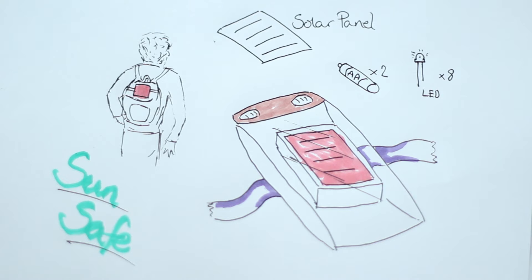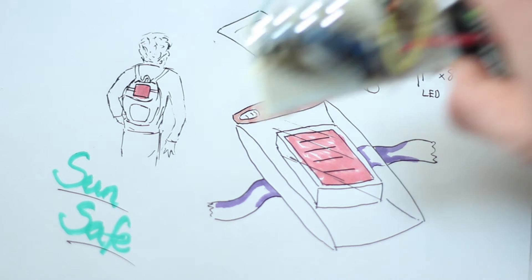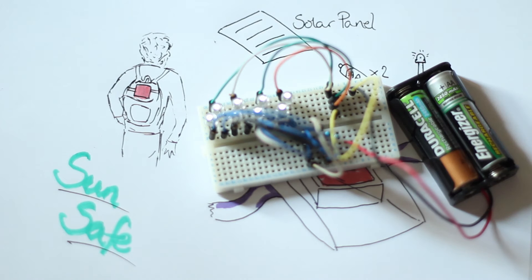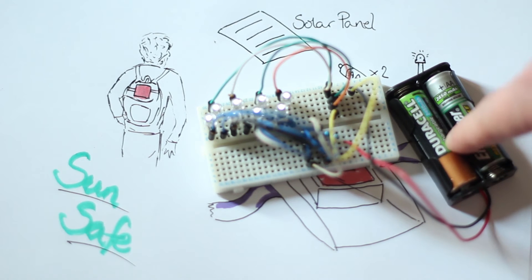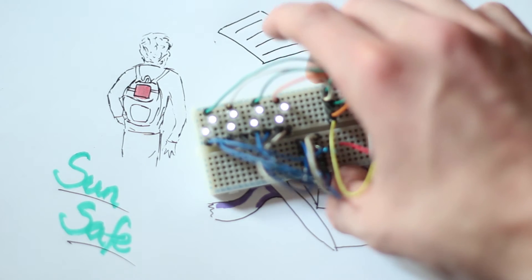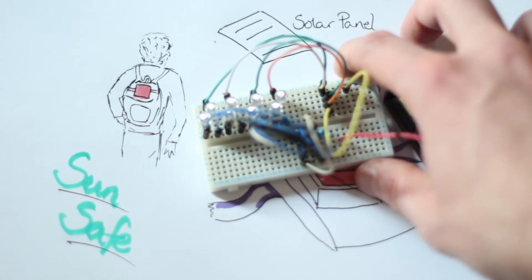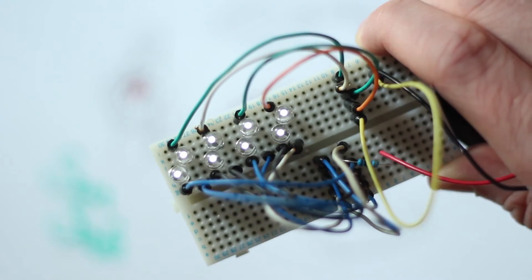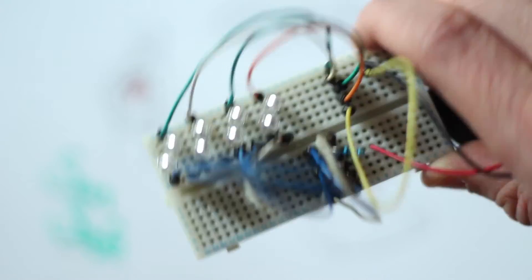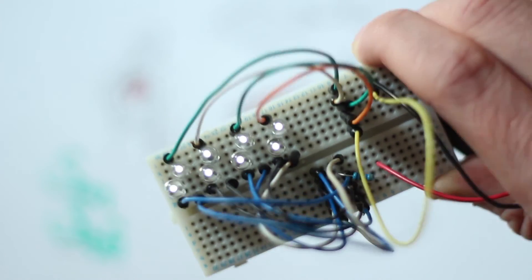Next up, I wanted to figure out how much power I was going to need, so I wired up some LEDs with a couple of rechargeable batteries. They are bright enough—let me give you a close-up. They are bright enough to be visible in the dark. I've tried it in a dark cupboard and they look good.